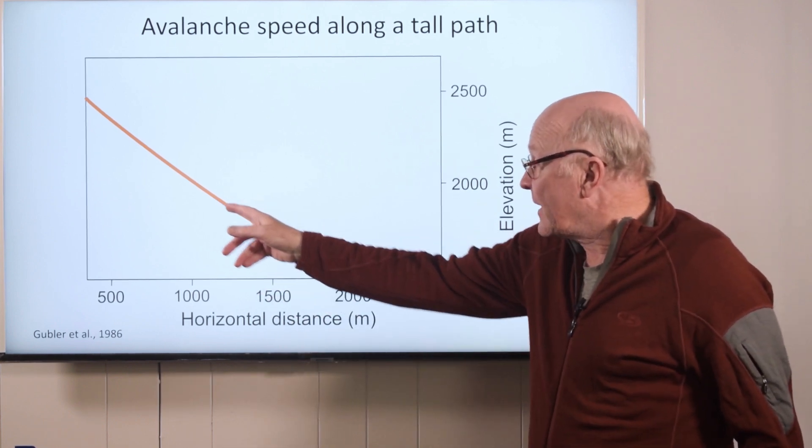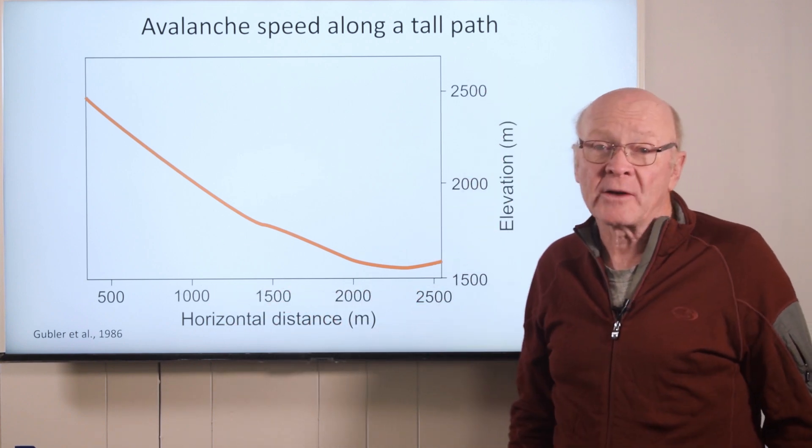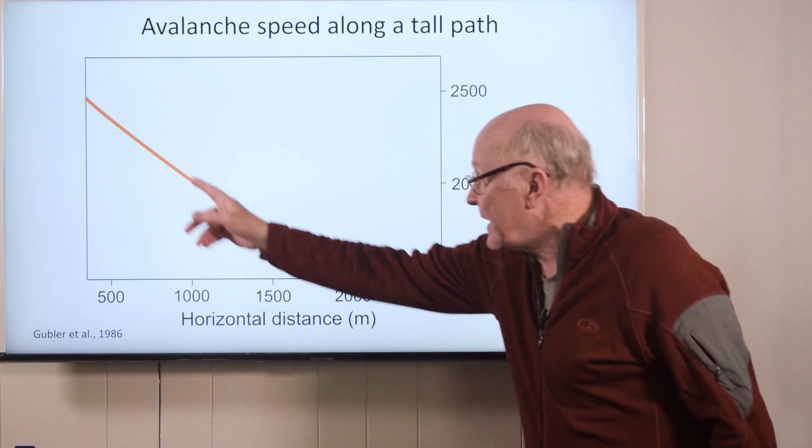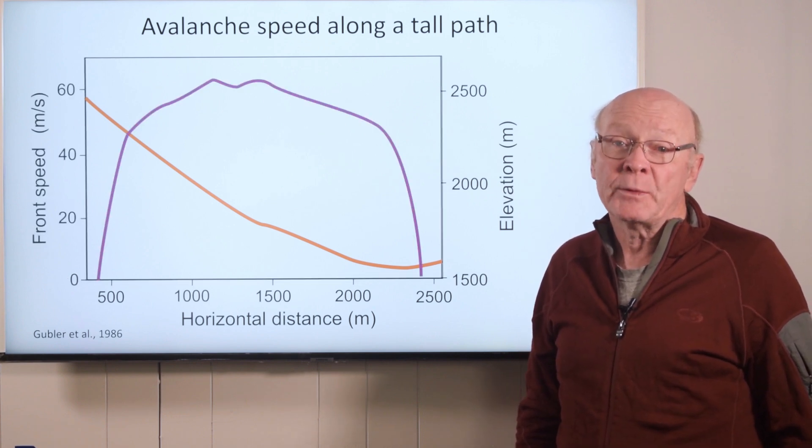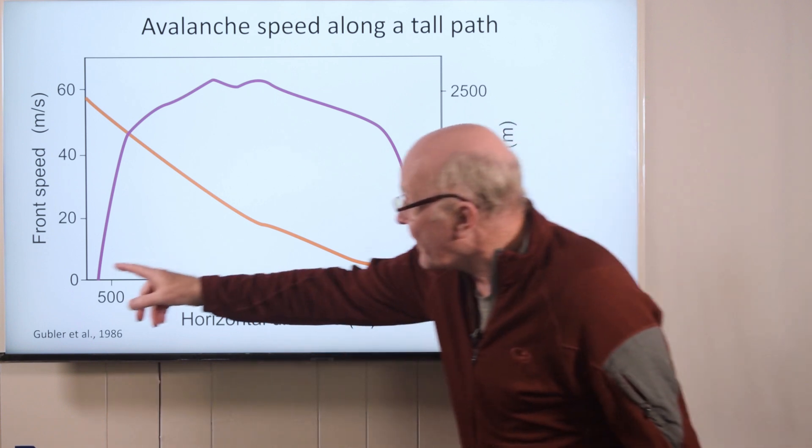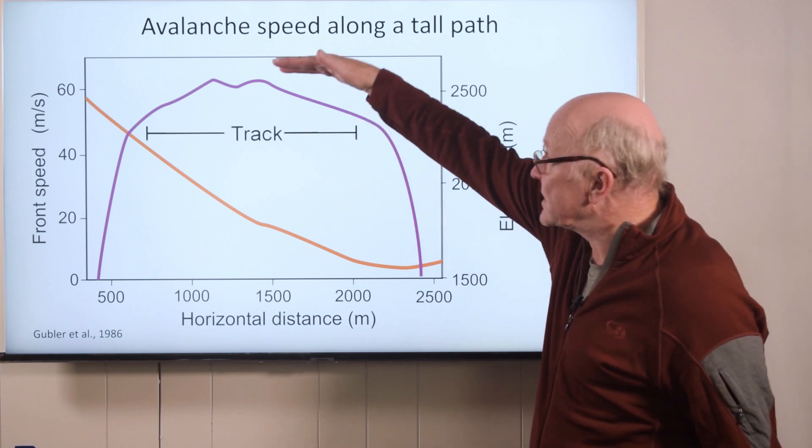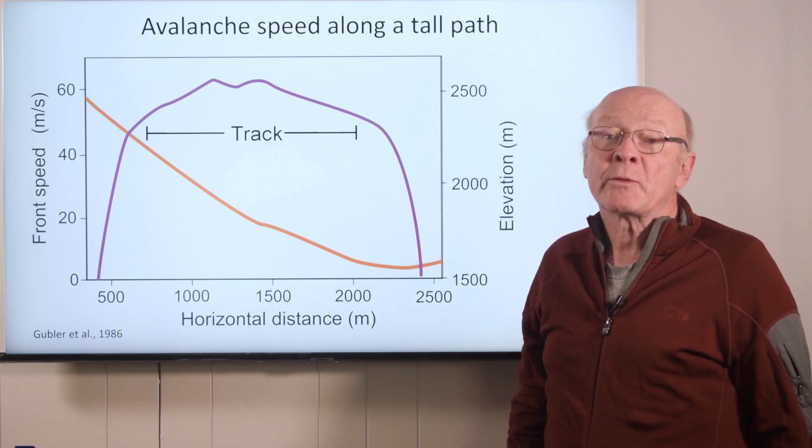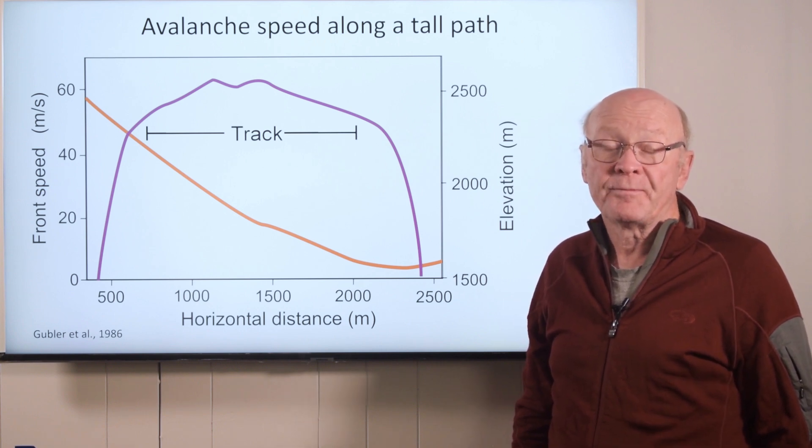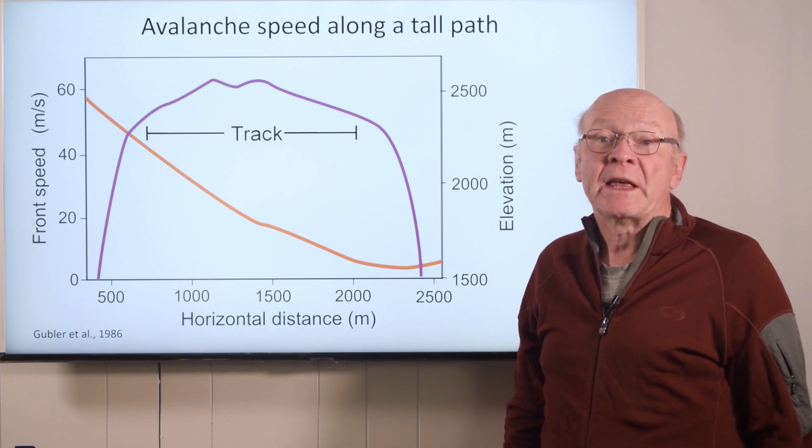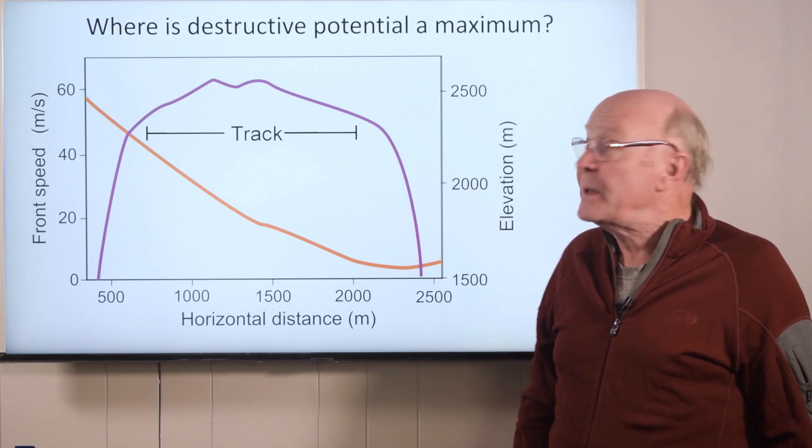Here is the profile of a large avalanche path. It extends almost two and a half kilometers horizontally and drops about 1,000 meters. As is common for many tall paths, the slope angle decreases progressively. The front speed of this avalanche was measured with radar. Initially, the pull of gravity along the slope was greater than the resistance, so the avalanche accelerated rapidly. In the track, the pull of gravity along the slope was similar to the resistance, so the speed varied less. Doppler radar has shown that large dry avalanches start to decelerate where the slope angle decreases to about 25 degrees. In the run-out zone, where the resistance was greater than the pull of gravity along the slope, the avalanche decelerated rapidly. Like most large dry avalanches, the speed peaked in the track.